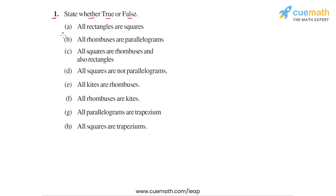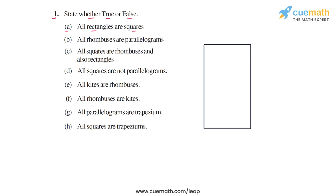The first statement is: all rectangles are squares. If you take any general rectangle, the adjacent sides may not be equal. But in a square, all the sides are equal. So all rectangles are not necessarily squares — the first statement is false.